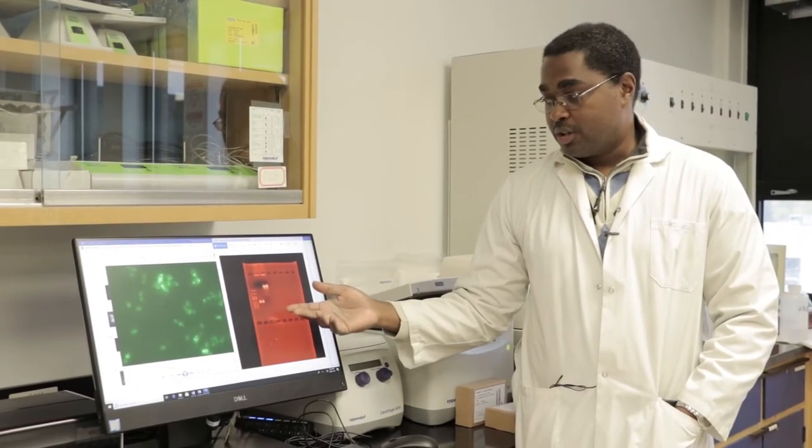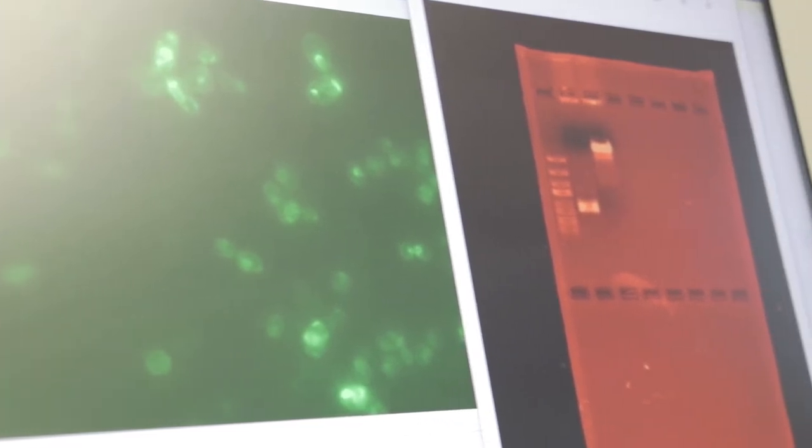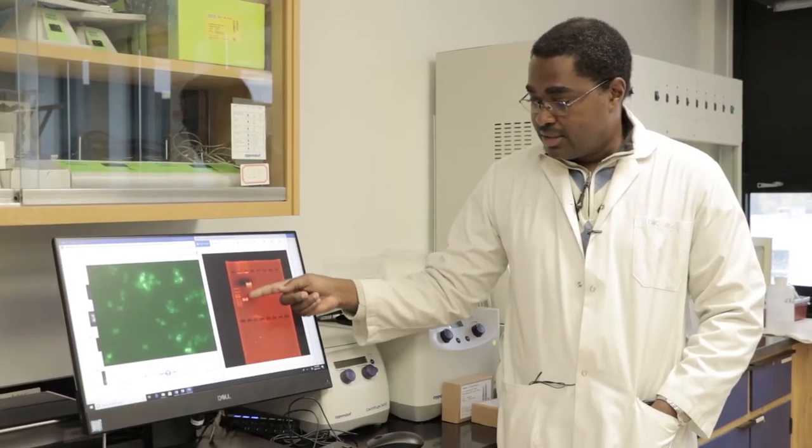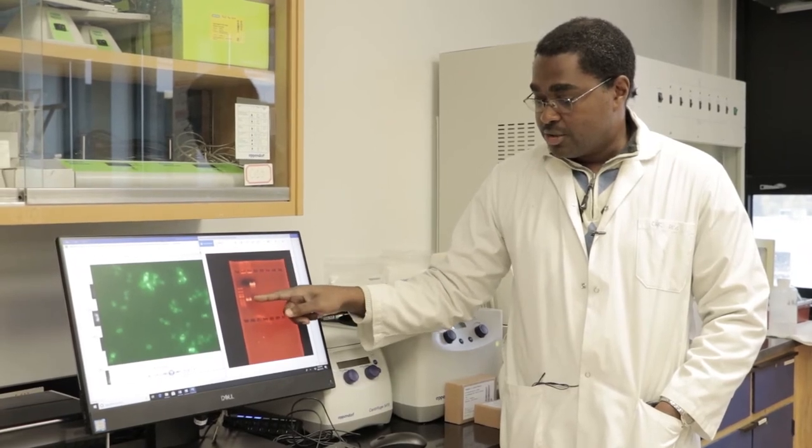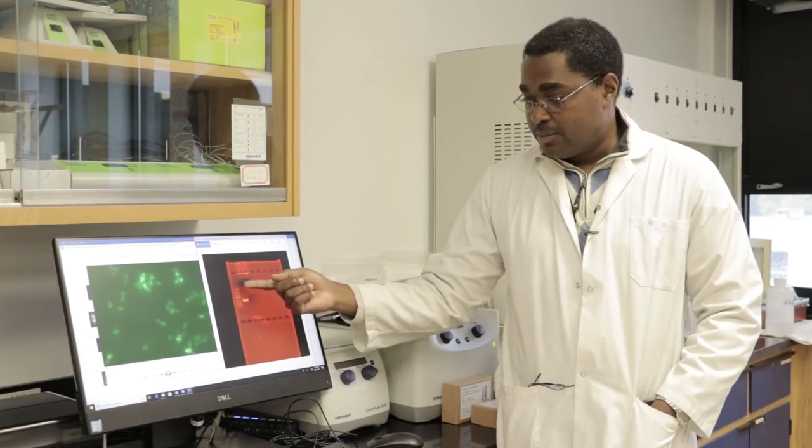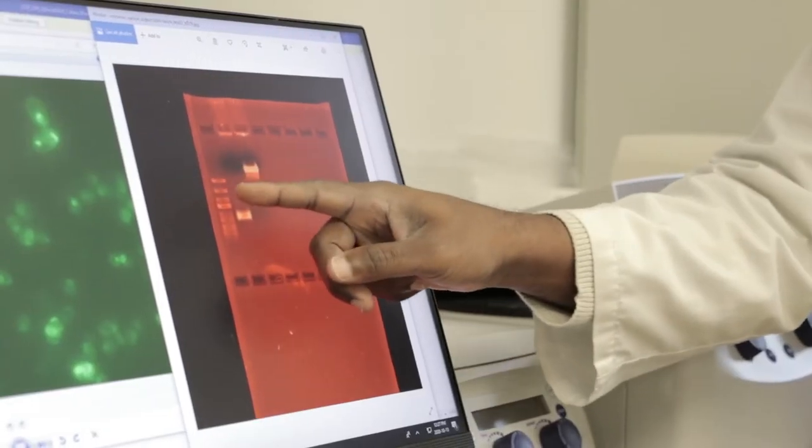What we see here is what we call an agarose gel, and we use this as another way of verifying whether or not our experiment works. We could use our PCR machine, also called a thermocycler. PCR stands for polymerase chain reaction, and it's a machine that carries out the chemical reaction that allows us to amplify DNA. It allows our fragments to be visualized and they will migrate through this gel according to their size.